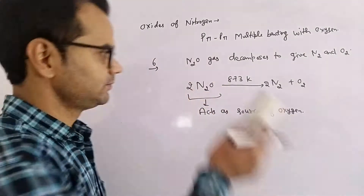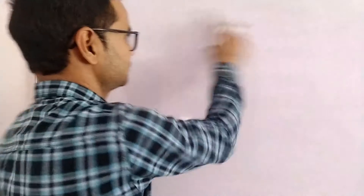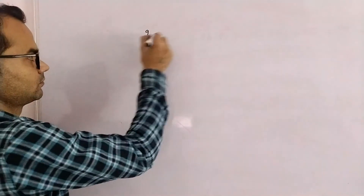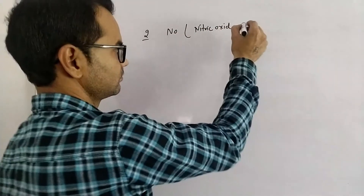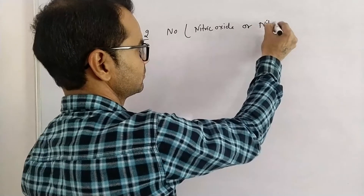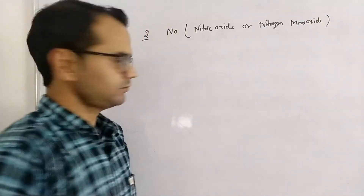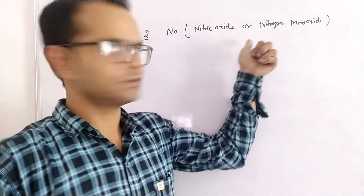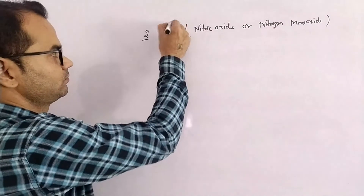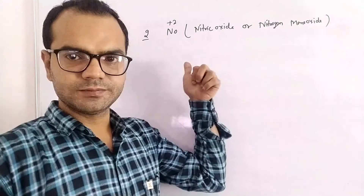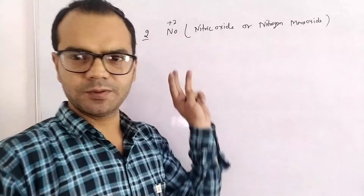The second oxide is Nitric Oxide, NO. The oxidation state of nitrogen in Nitric Oxide is +2, which is different from Nitrous Oxide where the oxidation state is +1. It is prepared by three methods.